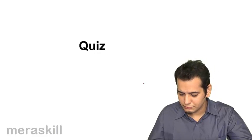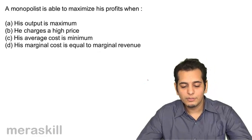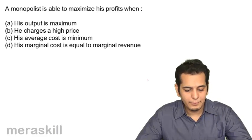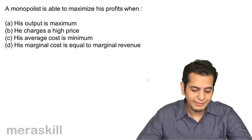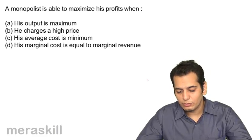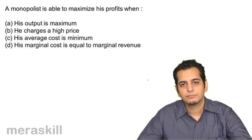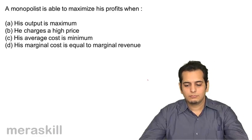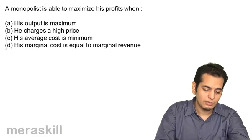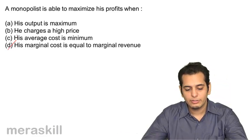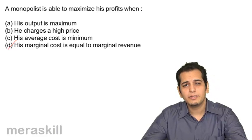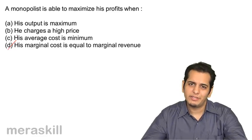Let's take a short quiz. First, a monopolist is able to maximize his profits when: a) his output is maximum, b) he charges a higher price, c) his average cost is minimum, d) his marginal cost is equal to marginal revenue. The answer is d) his marginal cost is equal to marginal revenue, because that is the point of equilibrium and he will be able to get maximum profit when he is at equilibrium.